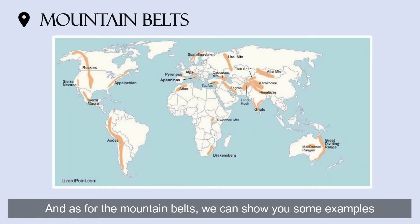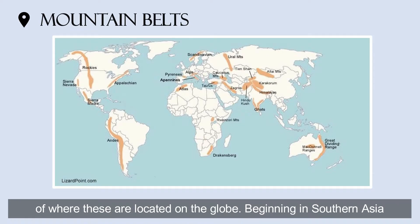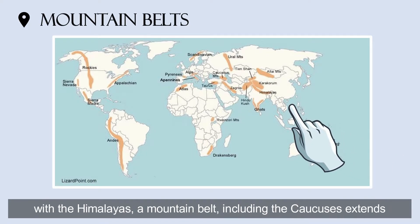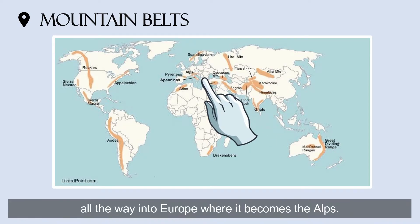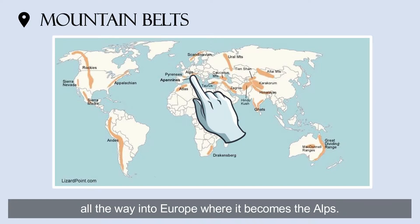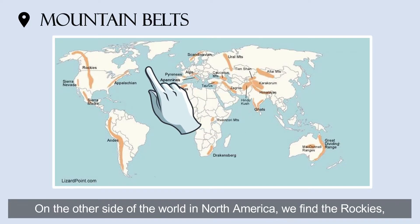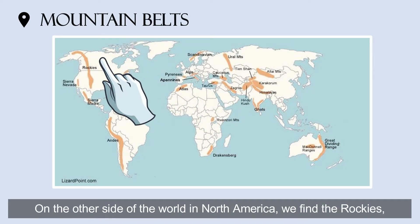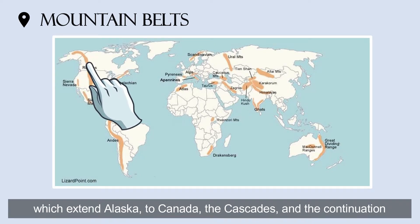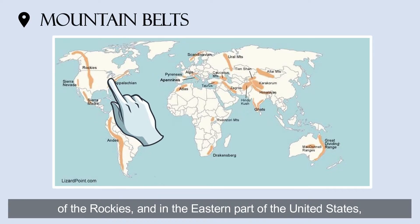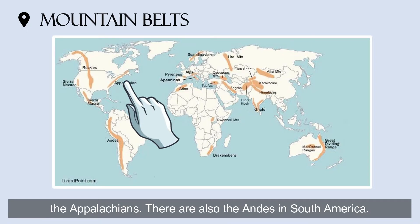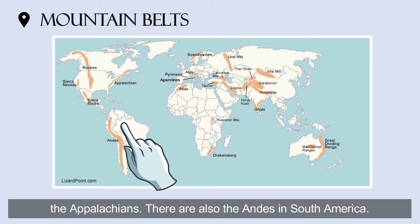As for the mountain belts, we can show you some examples of where these are located on the globe. Beginning in Southern Asia with the Himalayas, a mountain belt including the Caucasus extends all the way into Europe where it becomes the Alps. On the other side of the world in North America, we find the Rockies, which extend from Alaska to Canada, the Cascades, and the continuation of the Rockies. In the eastern part of the United States, the Appalachians. There are also the Andes in South America.